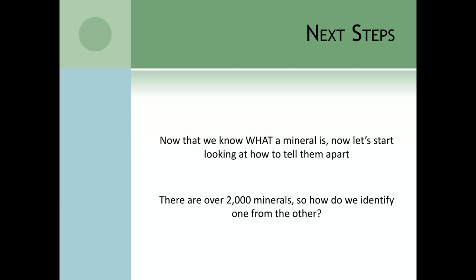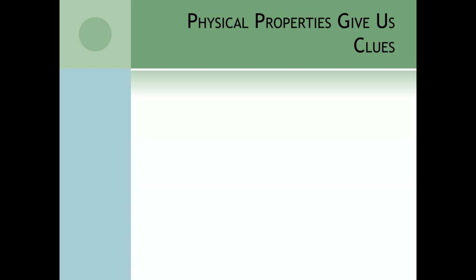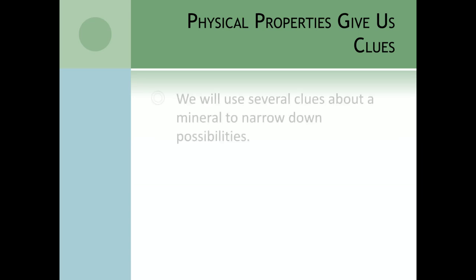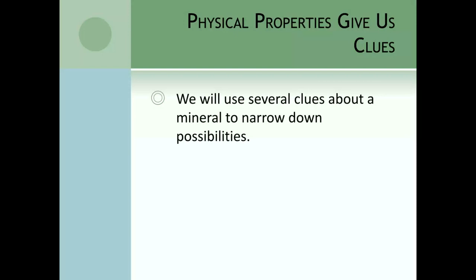Basically, what happens is something is being dug up somewhere — ground is being excavated to build something — and somebody comes across a mineral and will go to a geologist and say, 'What is this?' Mostly for safety reasons. Geologists use physical properties as clues. No single piece of information can identify a mineral, because many minerals share traits, but no two of the 2,000 minerals have everything the same. Geologists and sixth grade students need to use several clues to narrow down the possibilities.